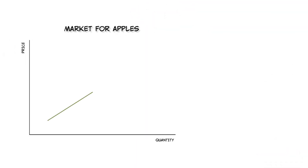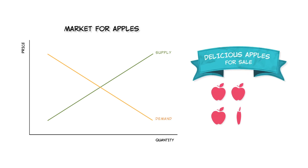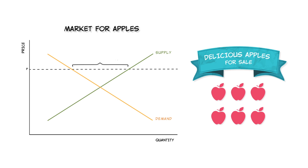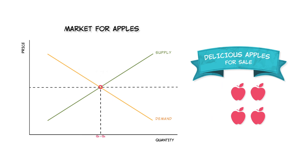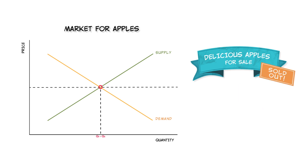Think about a typical market — say the market for apples. Unemployed apples, in this case, would be apples that aren't being bought. In a situation with high apple unemployment, you'd have a higher quantity supplied than the quantity demanded at the current price. In this situation, the price of apples would ordinarily drop until the quantity supplied equaled the quantity demanded and the market cleared.